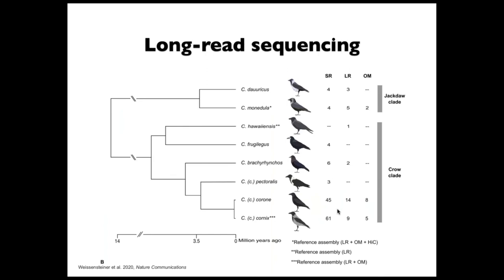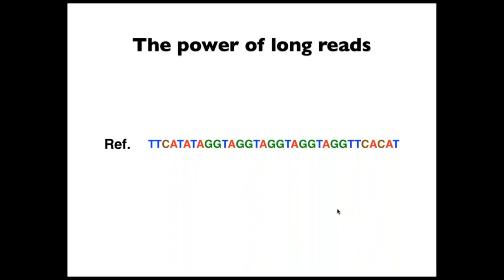For this, we compiled a nice dataset comprising the full phylogenetic range of the genus, along with short-read sequencing data, long-read sequencing data, and optical mapping data. But today I'm going to focus on the long-read sequencing. You might ask: if you already have short-read sequencing data, why do you actually need long reads? Why sequence more if you already have the data?